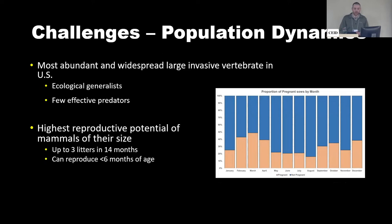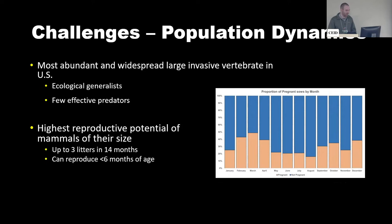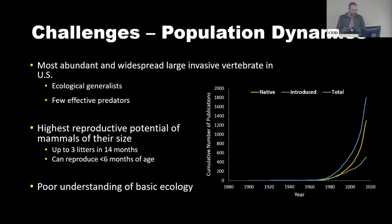Wild pigs are also extremely fecund. There is no breeding season in the United States — they've been known to reproduce in every month of the year. They can have up to three litters in as little as 14 months, with litter sizes averaging six to eight but up to ten. They have very low neonatal predation rates and can reproduce as young as six months of age with a four-month gestation period. Additionally, a poor understanding of basic ecology is a challenge — publications on pigs really didn't ramp up until the population boom of the 90s and 2000s.